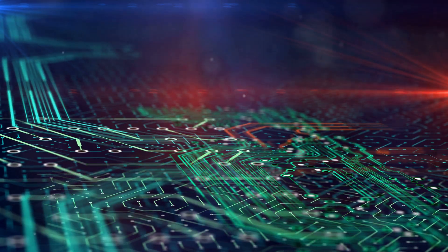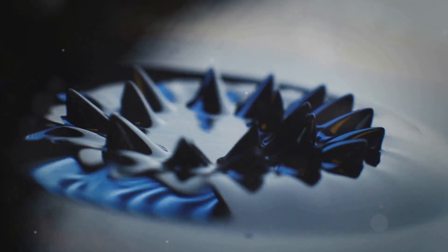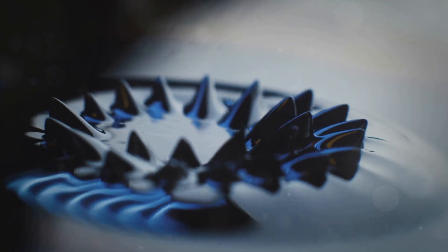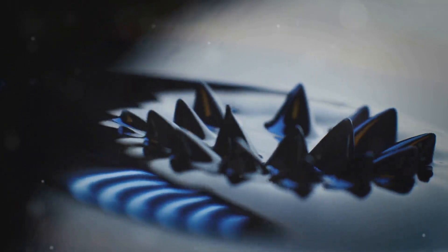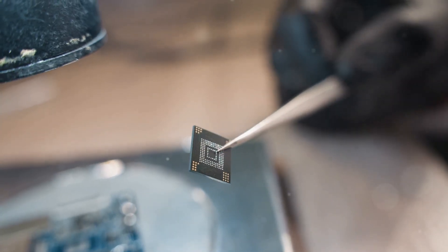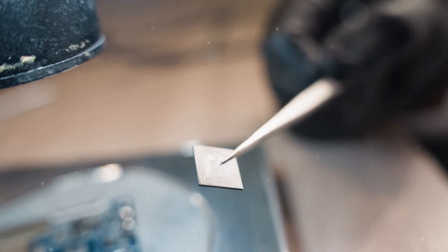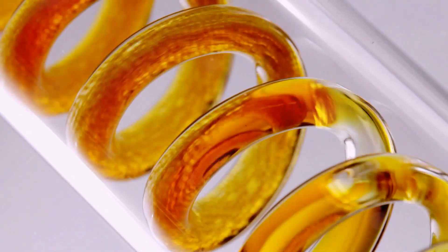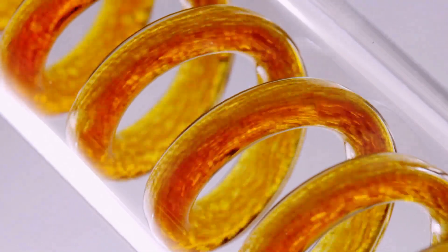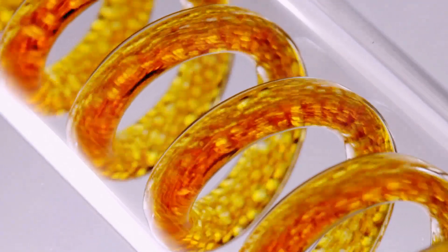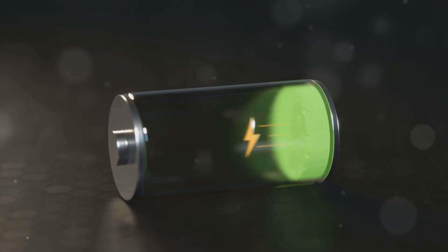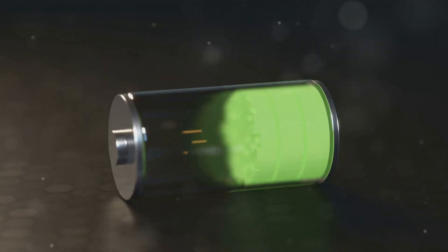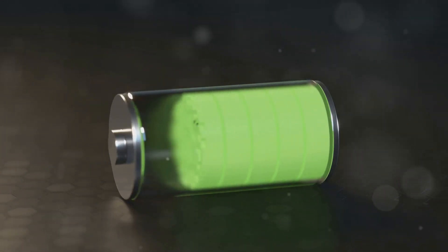Microchannels, the tiny highways of electron flow. Imagine these microchannels as tiny highways, meticulously designed to guide the flow of electrons and facilitate the redox reactions. These channels, often thinner than a human hair, are where the real magic of microfluidic fuel cells unfolds. Within these minuscule conduits, the fuel and oxidant flow side by side, separated by a carefully engineered barrier that prevents them from mixing directly. This separation is crucial because it forces the electrons to take a detour through an external circuit to complete the redox dance.